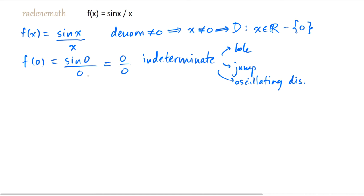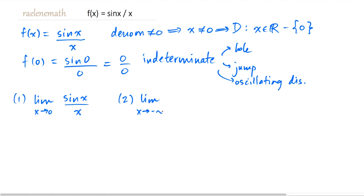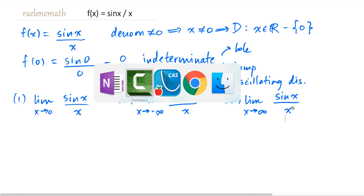In addition to finding out what happens at x equal to 0, we're going to look at the end behavior. So we're going to look at three different limits: the first is the limit as x approaches 0 — what is happening to the height of the graph, what is y trying to approach? We're also going to look at the left end behavior and the right-hand end behavior, the limit as x approaches positive infinity.